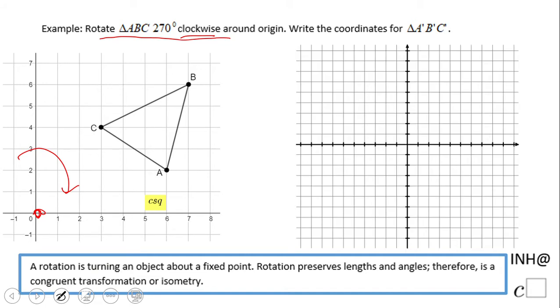I'm going to grab point C because that is the closest point to the origin. Let's count: 1, 2, 3, 1, 2, 3, 4. I need to go clockwise around this point.